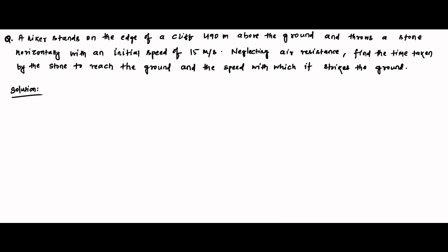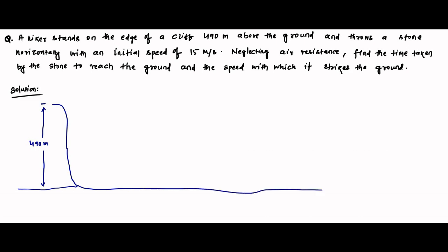Neglecting air resistance, find the time taken by the stone to reach the ground and the speed with which it strikes the ground. First, let us draw the diagram to understand the situation. Here we have a cliff which is 490 meters above the ground. A hiker is standing on the top of the cliff and throws a stone with a horizontal initial speed of 15 meters per second. This is the initial speed.